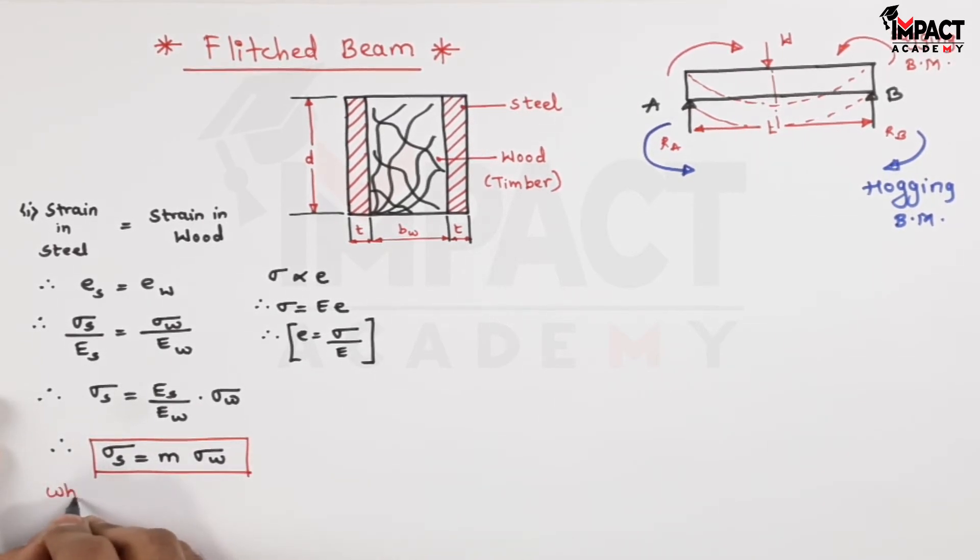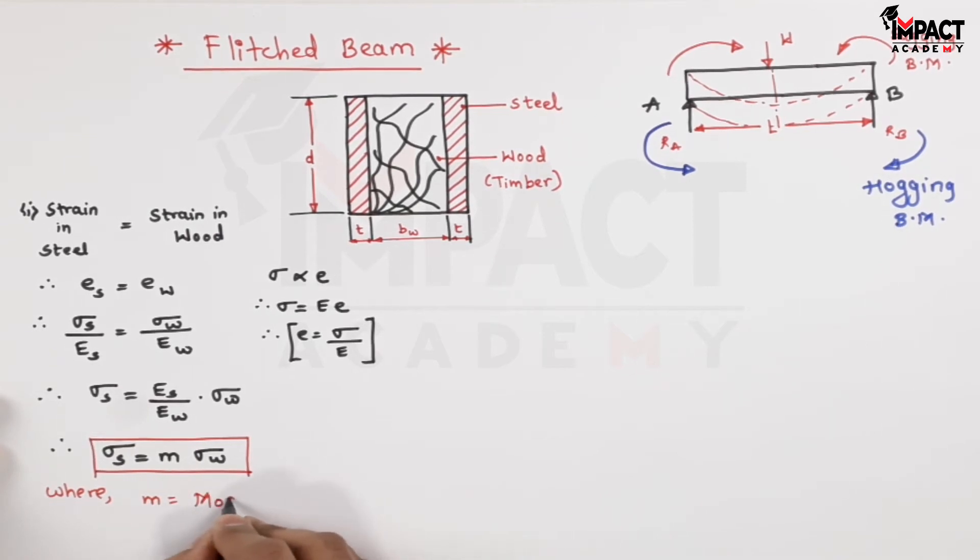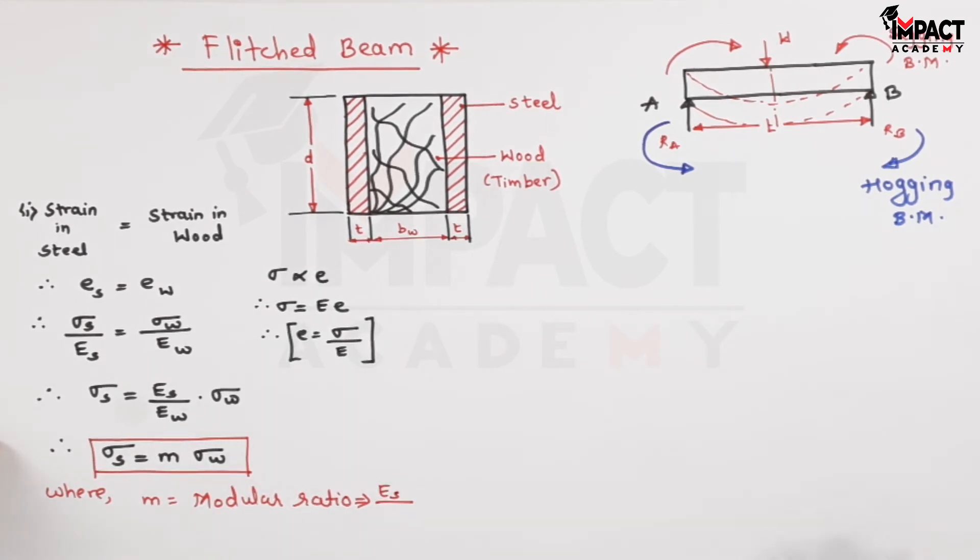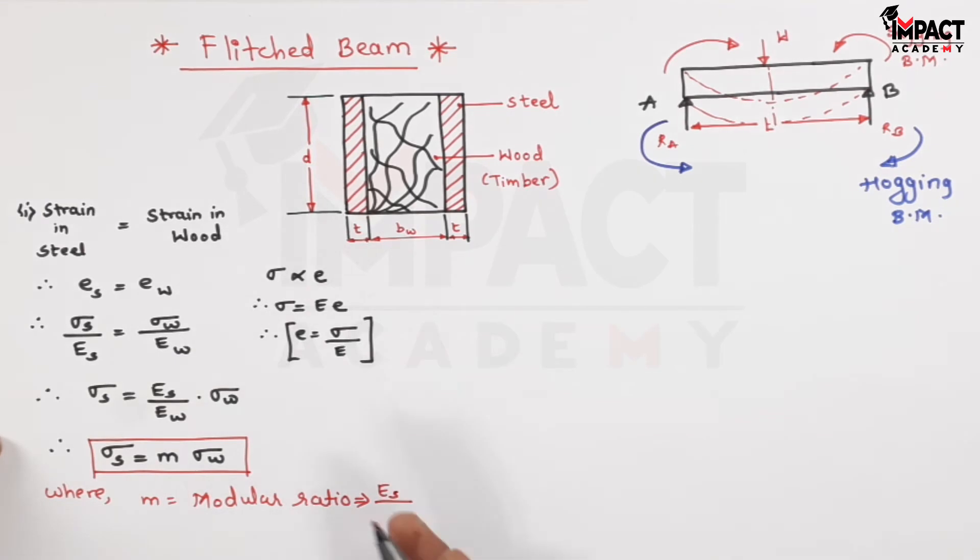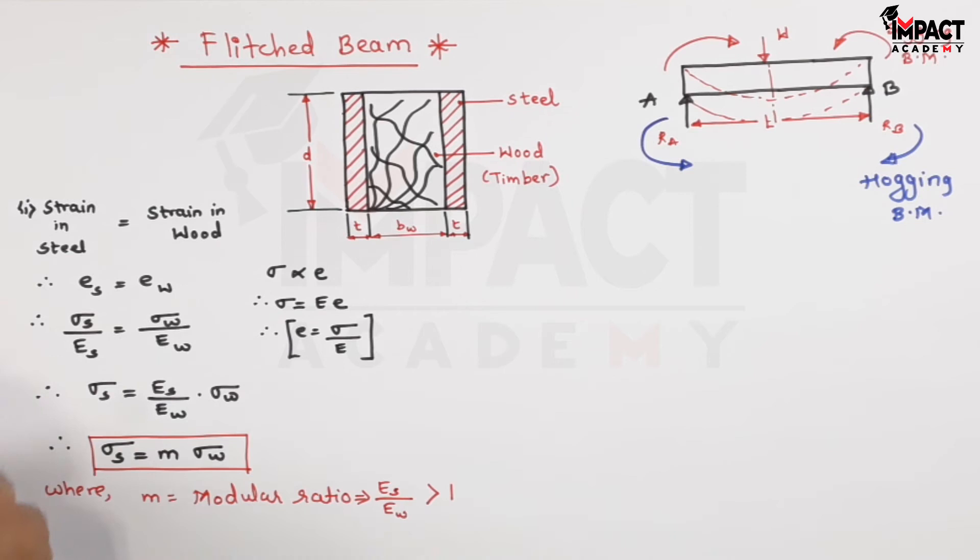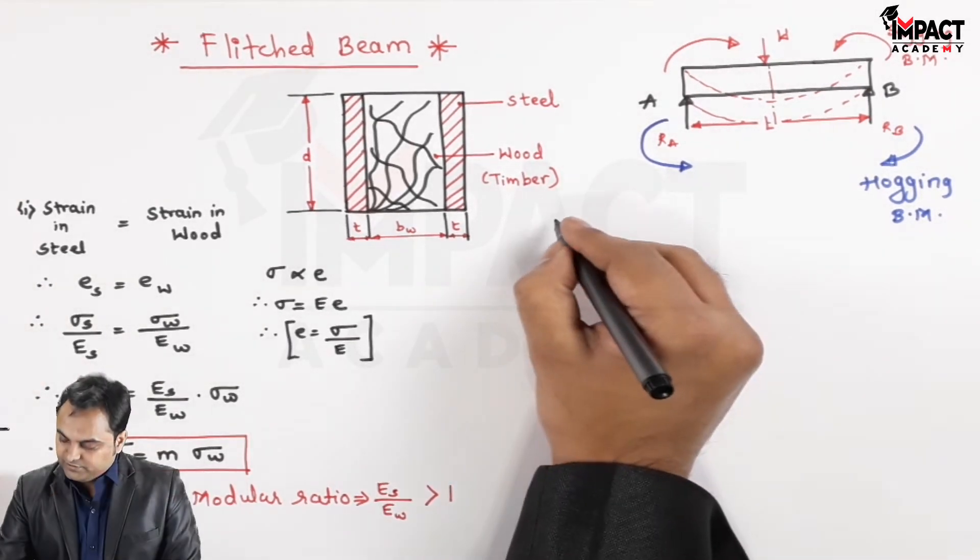Here I can see that m is called as the modular ratio, and that modular ratio is given by the Young's modulus of the greater value. That is, when we compare steel with wood, steel is going to have more modulus of elasticity because it is an elastic or ductile material, whereas wood is brittle, so having less value of Young's modulus. So this modular ratio is greater than 1. Next, I can also say that since the modular ratio is greater than 1, whatever the stress is there in steel, that would be greater than that in wood. So this was one of the conclusions from the flitched beam. The another conclusion is: